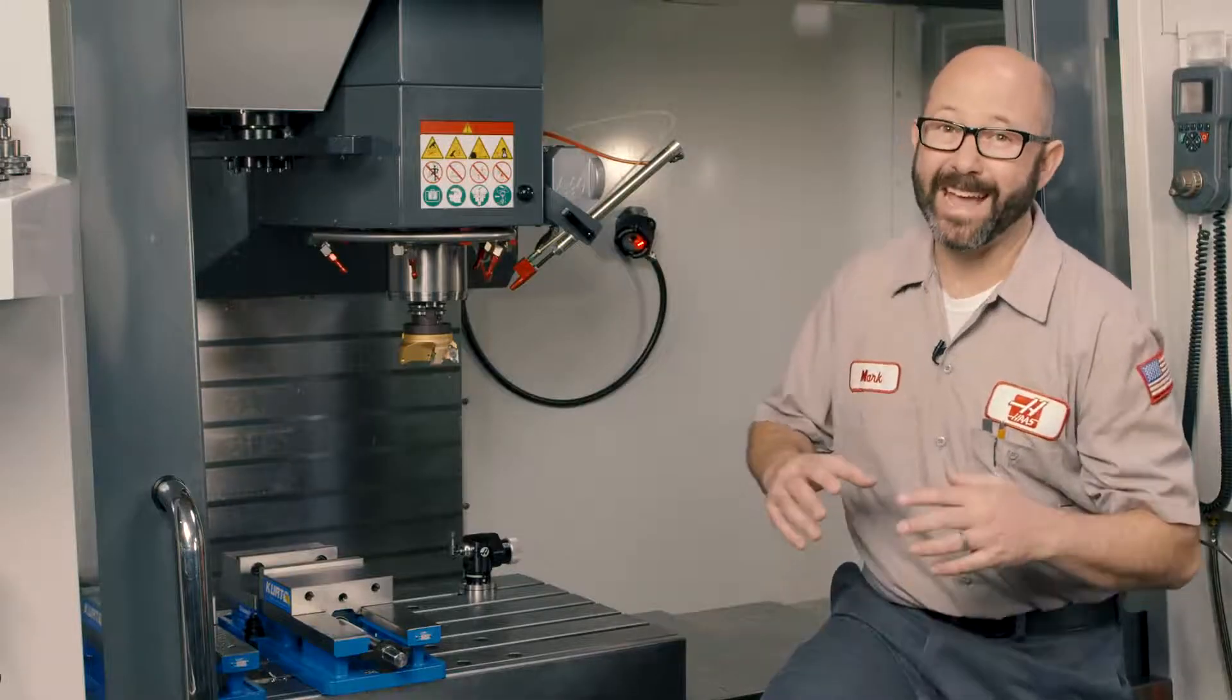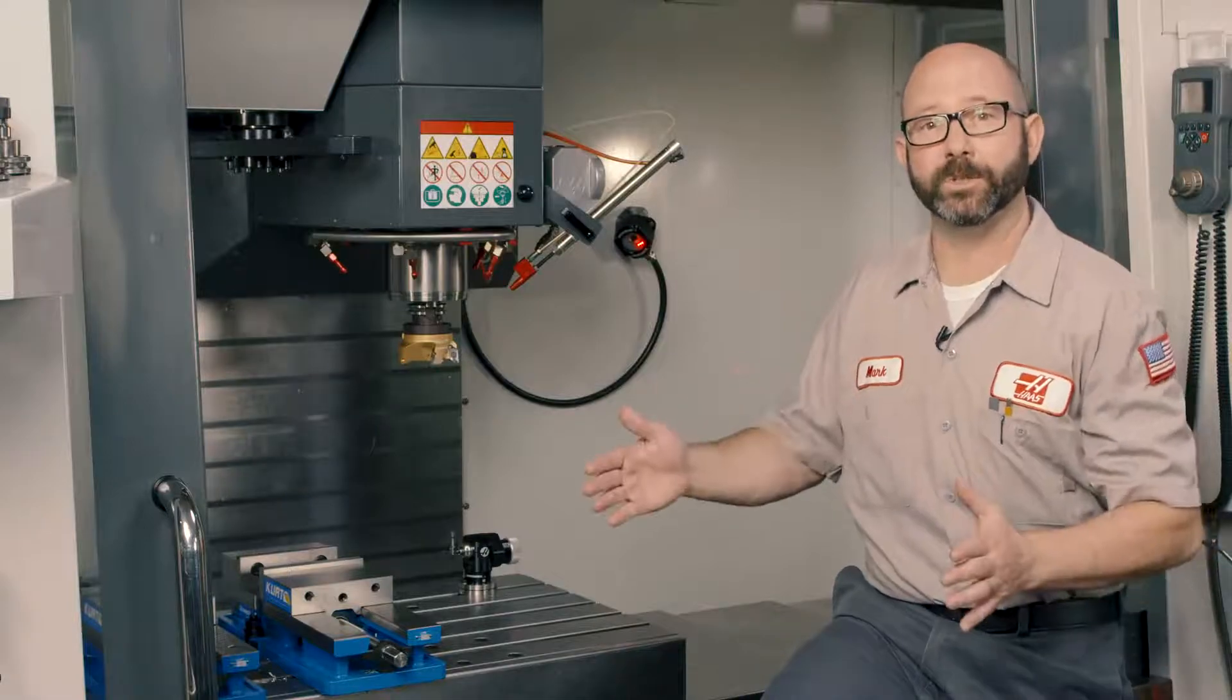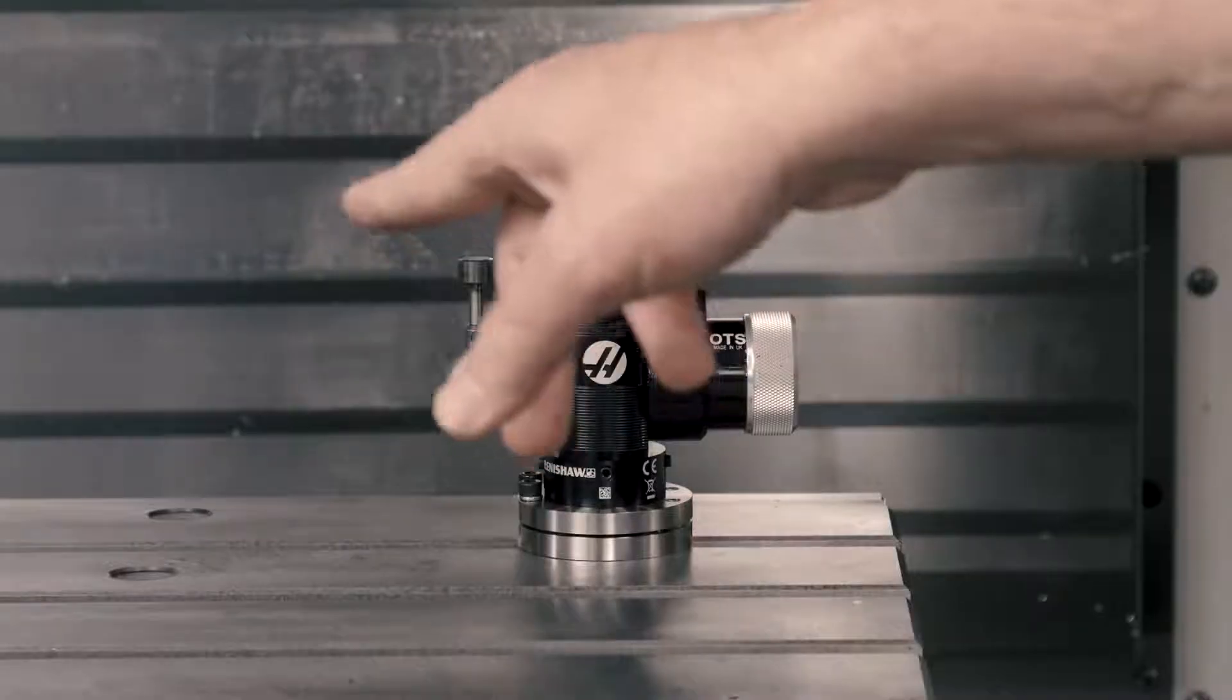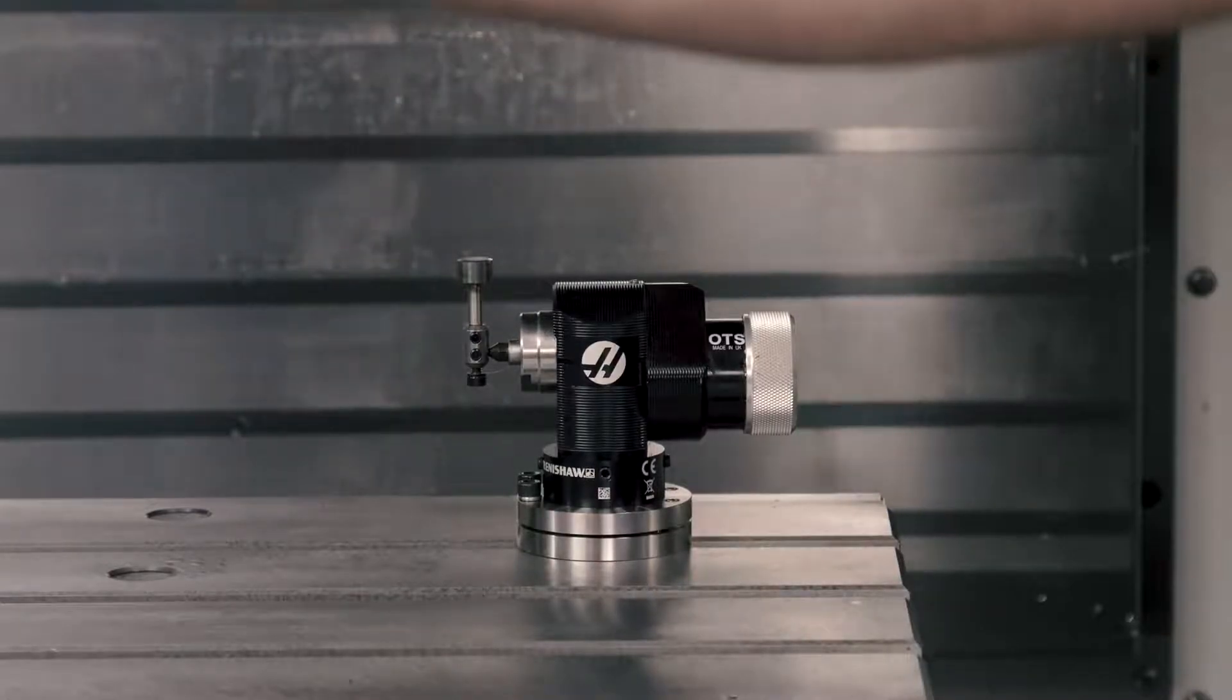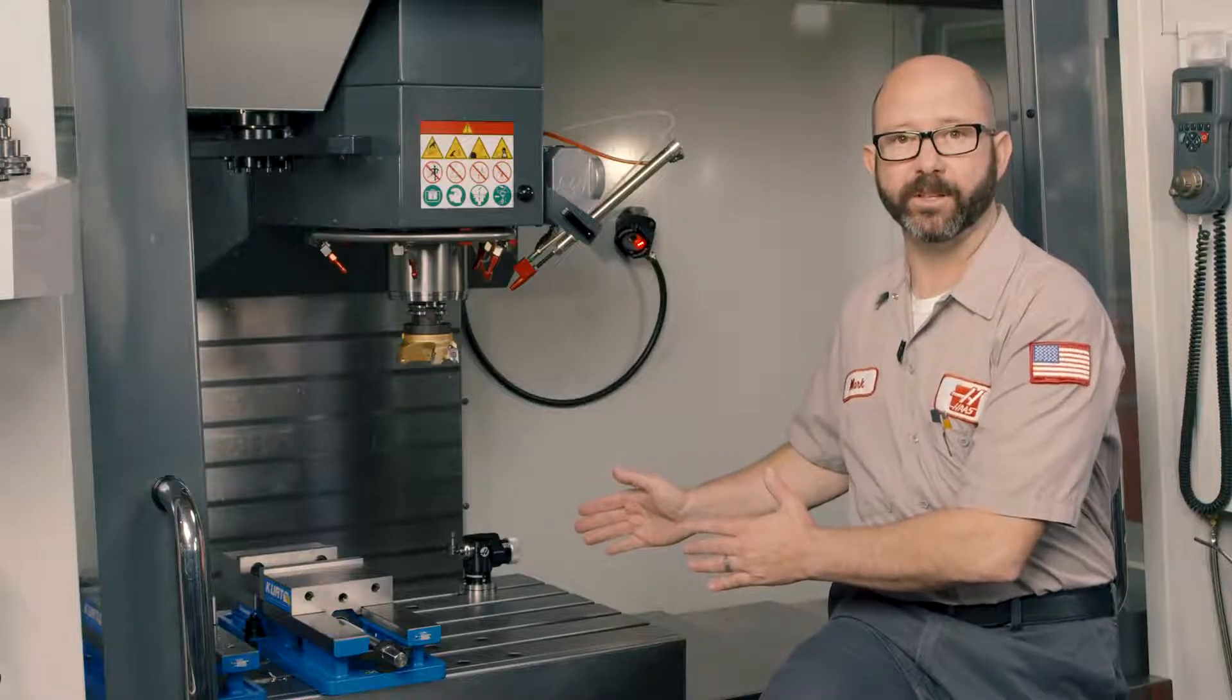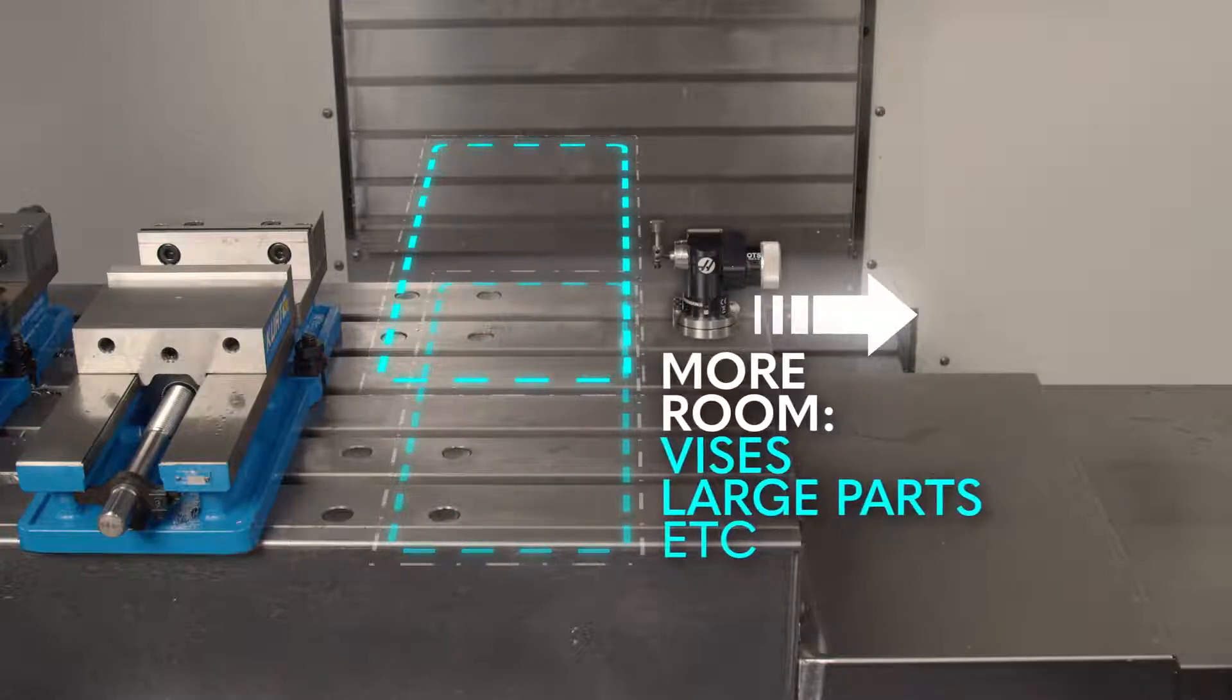Okay, so we can't really stretch out the iron on your table but what we're gonna do is pretty close. We're gonna move our table probe, our OTS here, to the right, closer to the edge of our travel. And this is gonna give us more room on the table for stuff. For vices, for larger parts, that kind of thing.